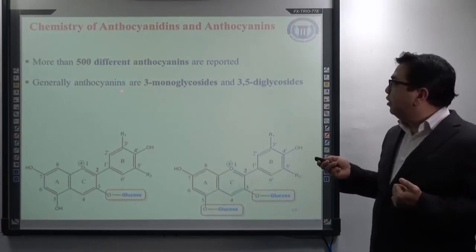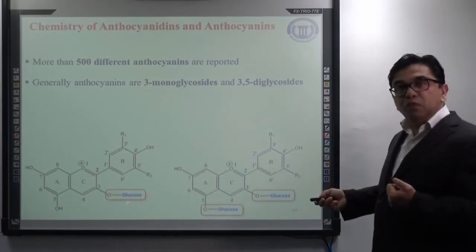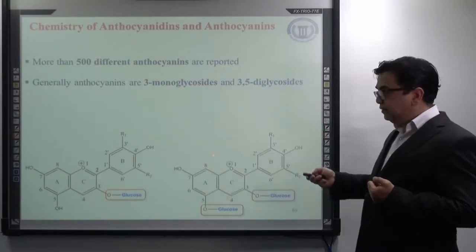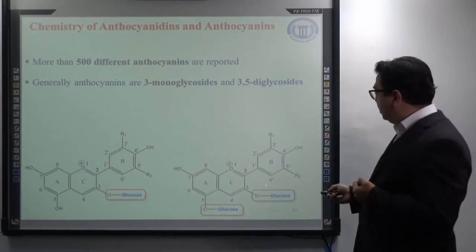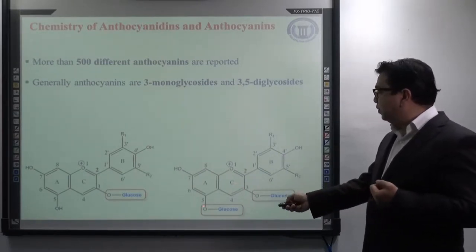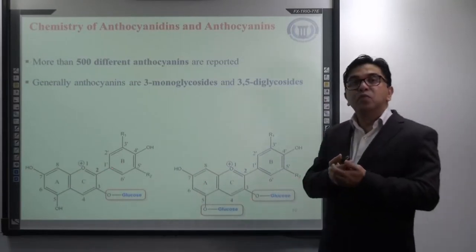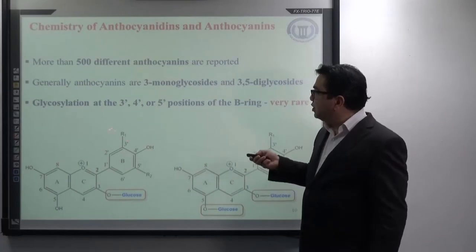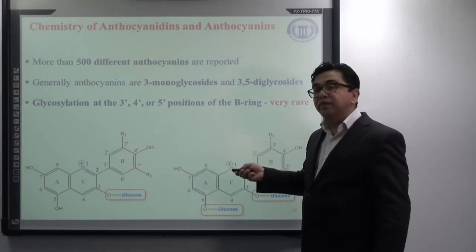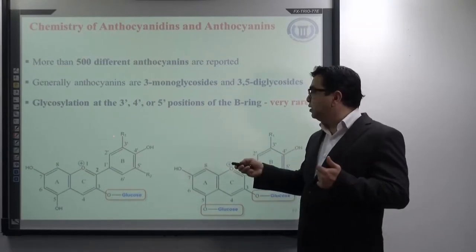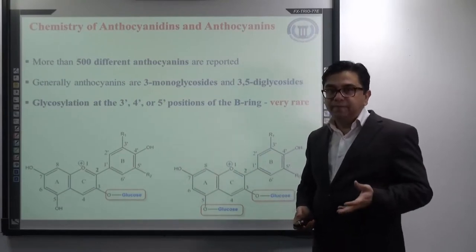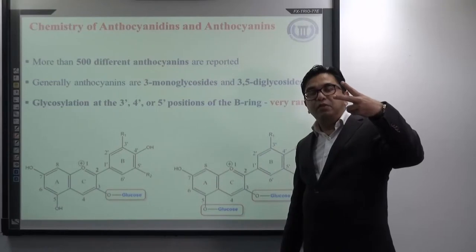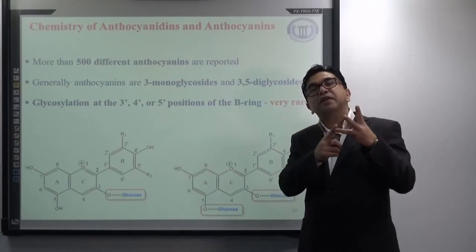Generally, anthocyanins are found most commonly as 3-monoglycosides — where the sugar molecule is attached to the third position — or as 3,5-diglycosides, where sugar molecules are attached to the third position of ring C and the fifth position of ring A. These two varieties are most common in nature. It should be noted that, even though rare, the sugar molecule can also attach to the OH groups at the third, fourth, and fifth positions of ring B. So glycosylation of ring B is also possible and available in nature, though 3-monoglycosides are most available, followed by 3,5-diglycosides, followed by ring B glycosylation.